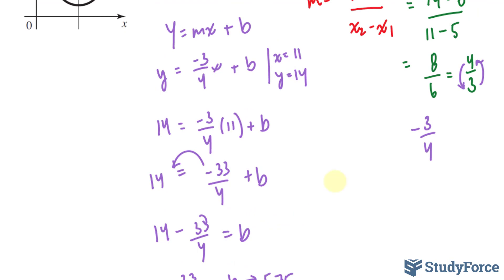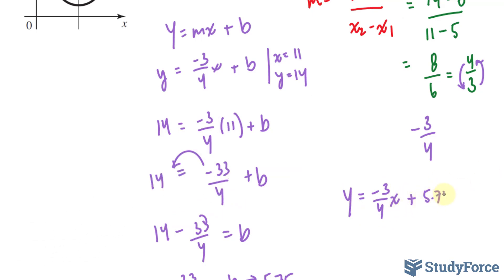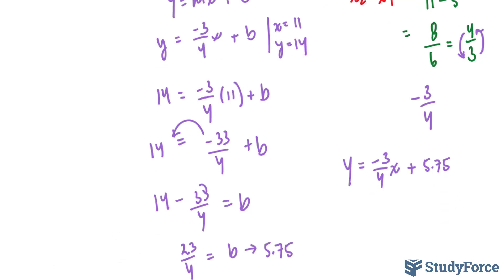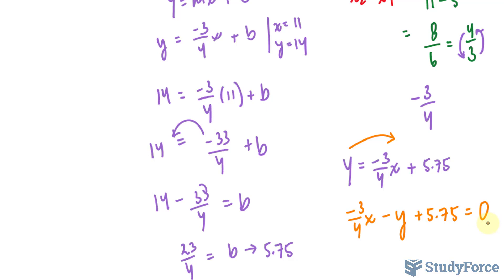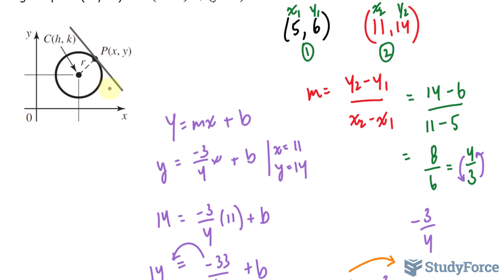That being said, our equation looks like y is equal to negative 3 over 4x plus 5.75, or written as a fraction, plus 23 over 4. They also want it in general form, meaning all terms are on one side. The y needs to move to the right side, so we end up with negative 3 over 4x minus y plus 5.75 equals 0. That represents the general form equation of this tangent line.